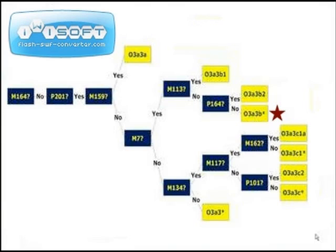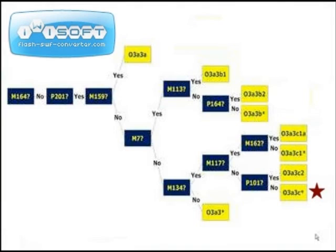If you do not have M7, check your result for M134. A positive result for this mutation places you within subclade O3A3C. If you have M117 and M162, you are in O3A3C1A. If you just have M117, you are in O3A3C1 star. If you do not have M117, but are positive for P101, you are in O3A3C2. A negative result for P101 places you within paragroup O3A3C star. Finally, if you did not have M134, you are in paragroup O3A3 star.